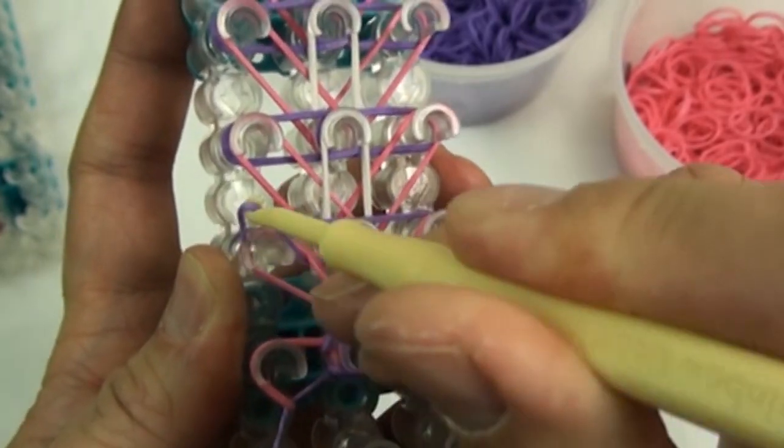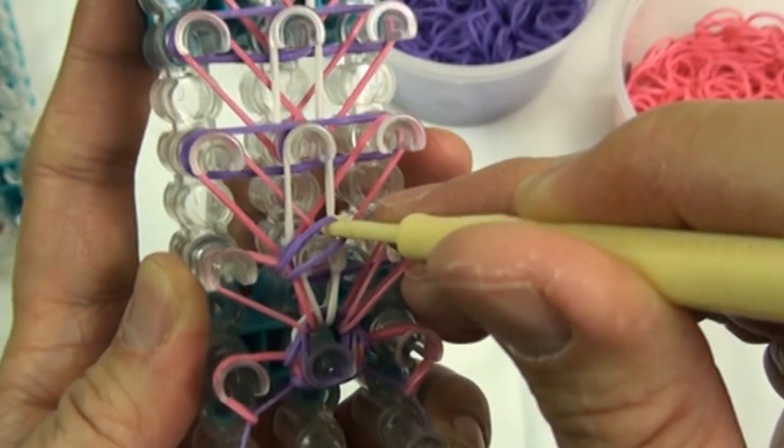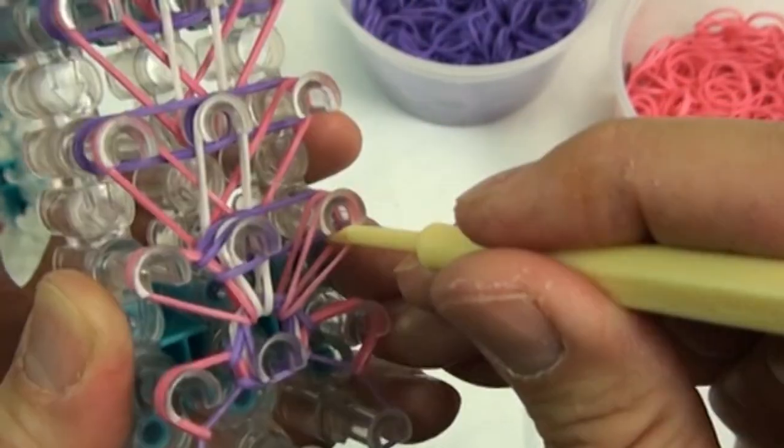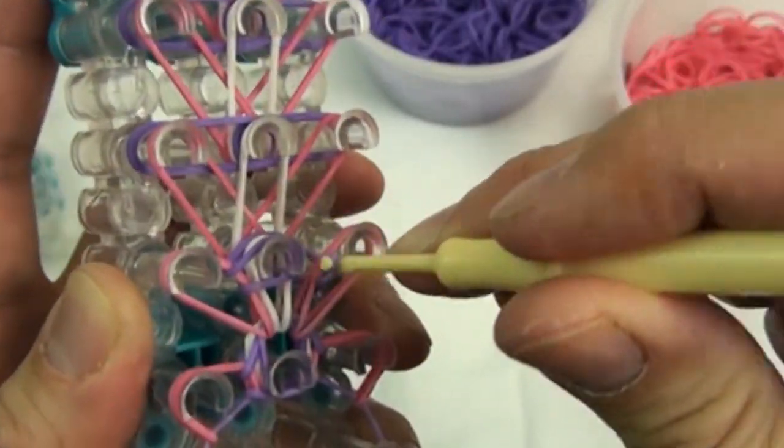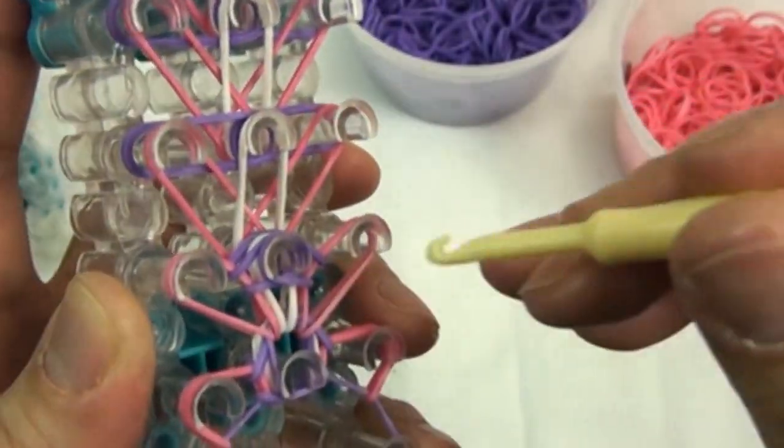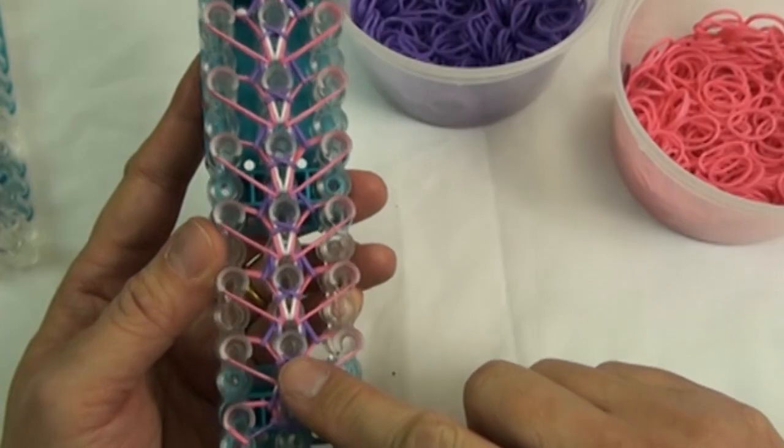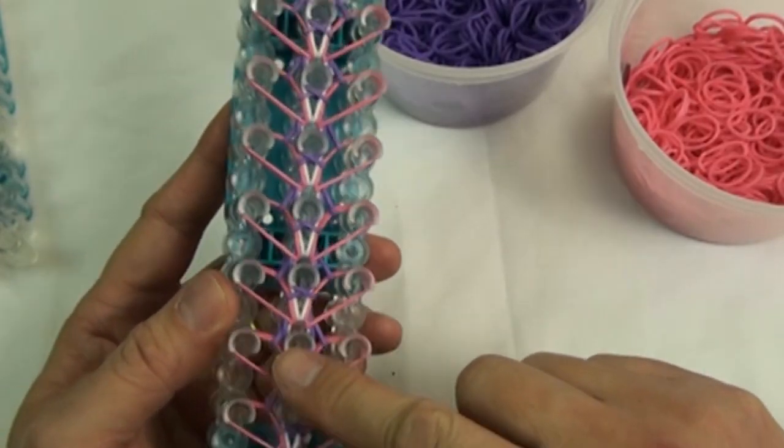Now we'll pick the purple rubber band from the left to the center and do the same from the right-hand side. Once you're done, they should look like this.